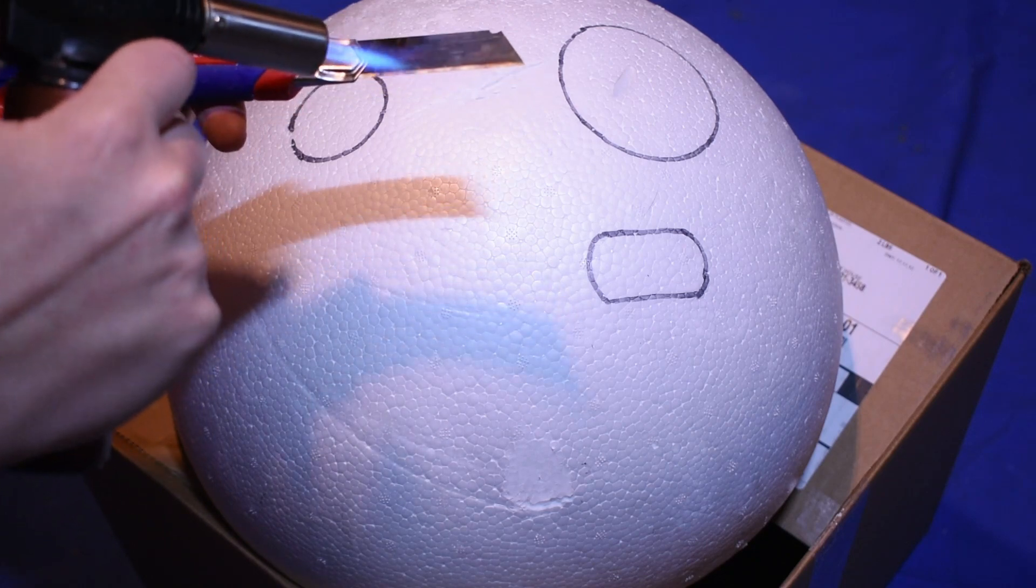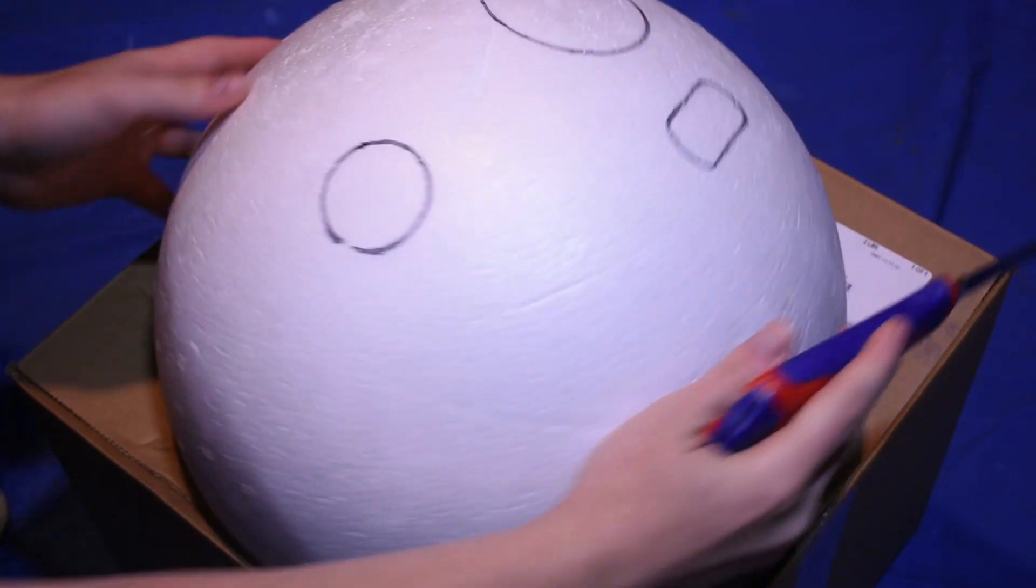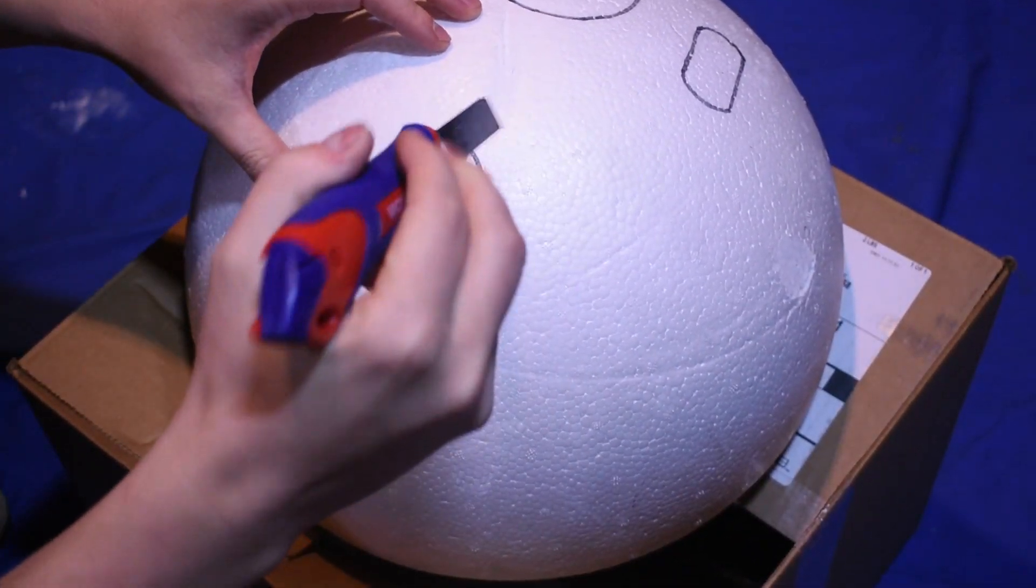Let's show you how we made some holes in the sphere and what they're for. Our first small hole is for the light meter itself. Heating up a razor blade makes quick work of foam like this.